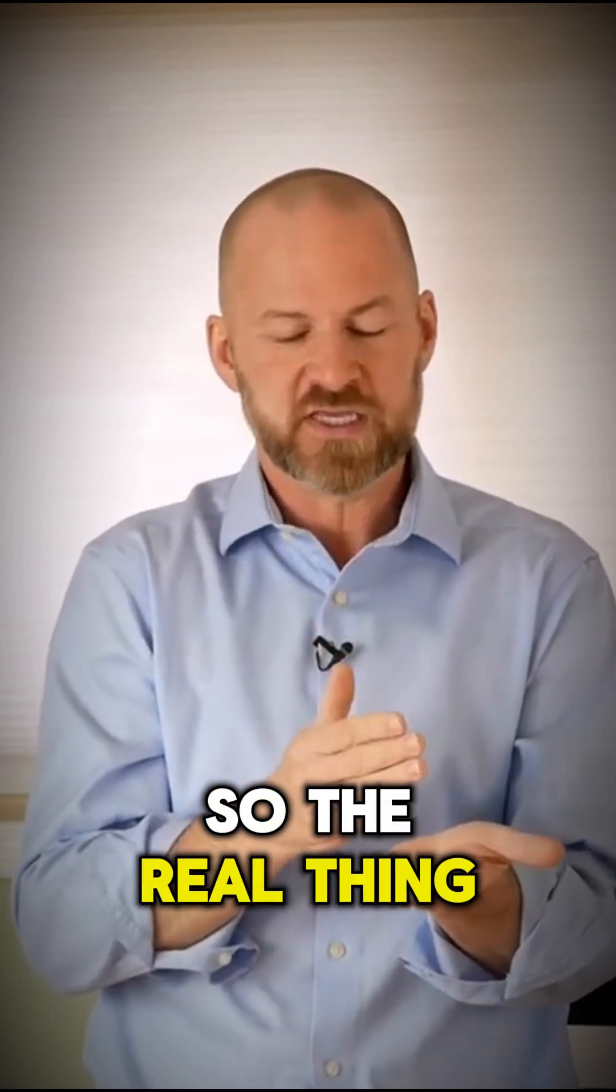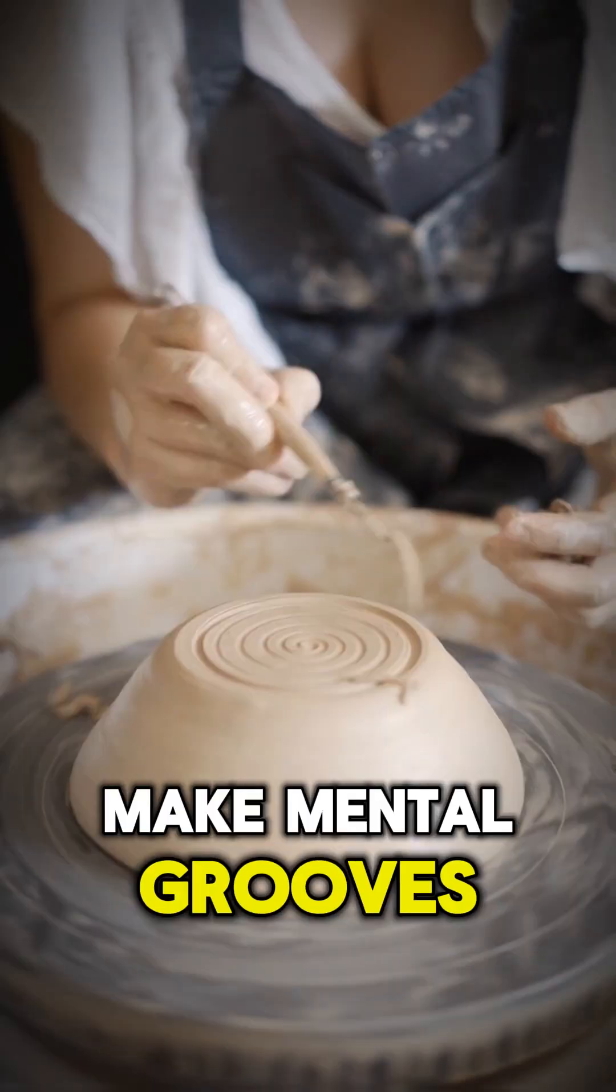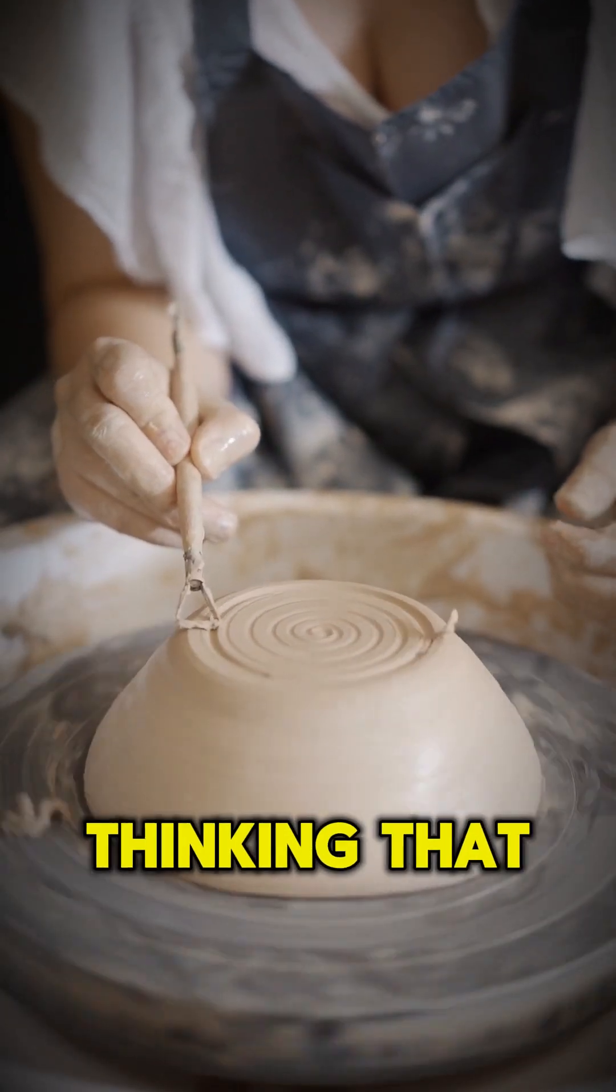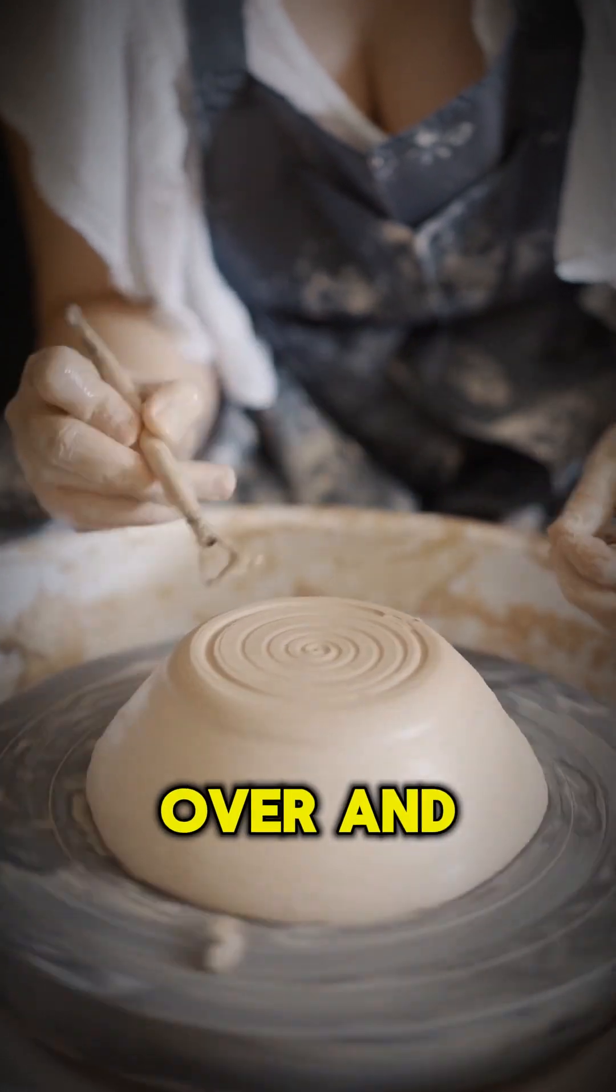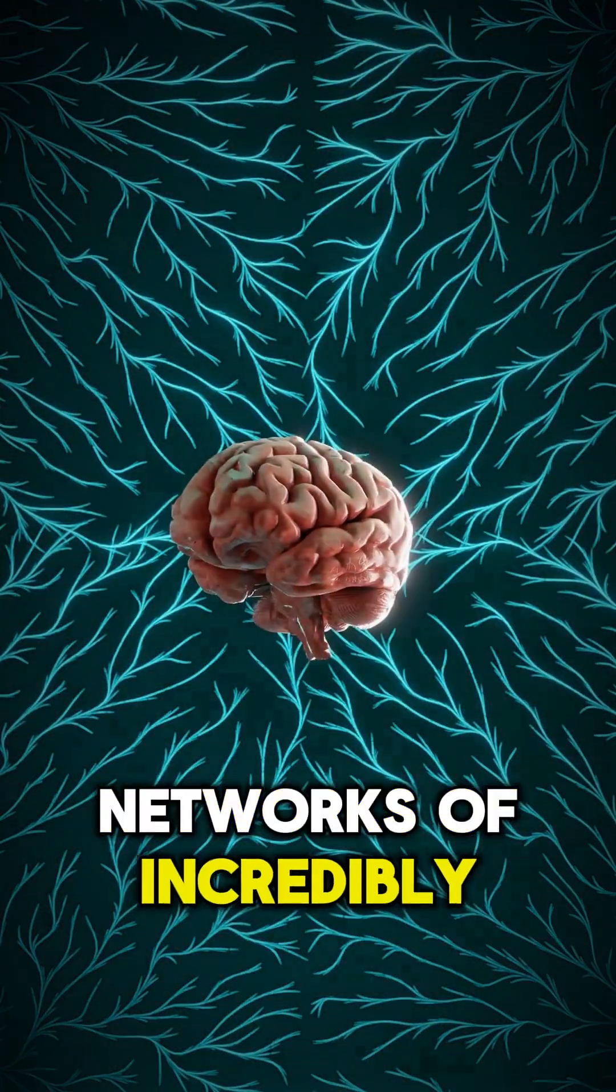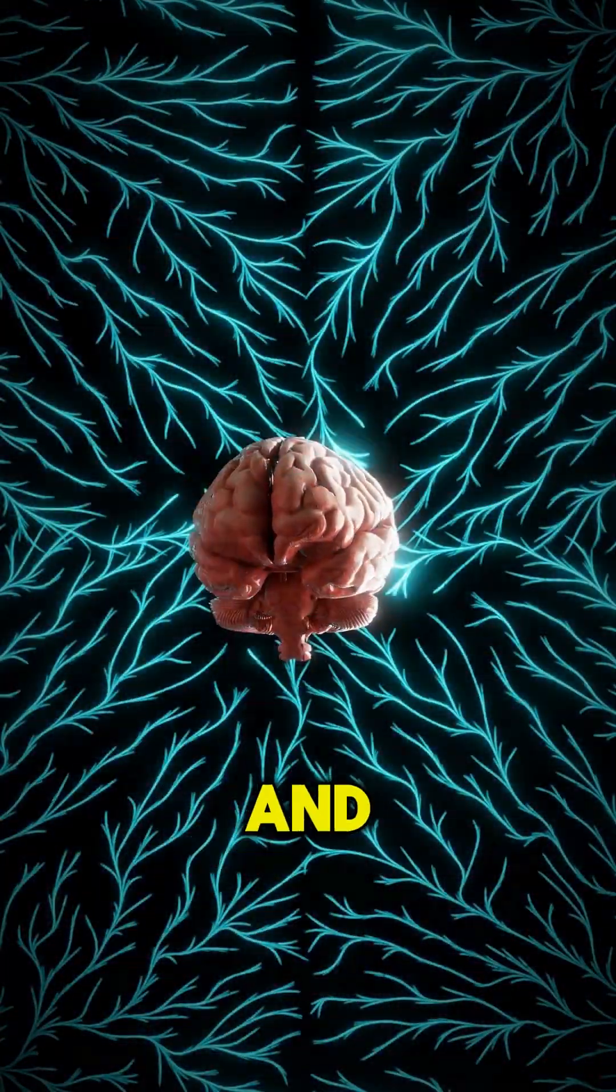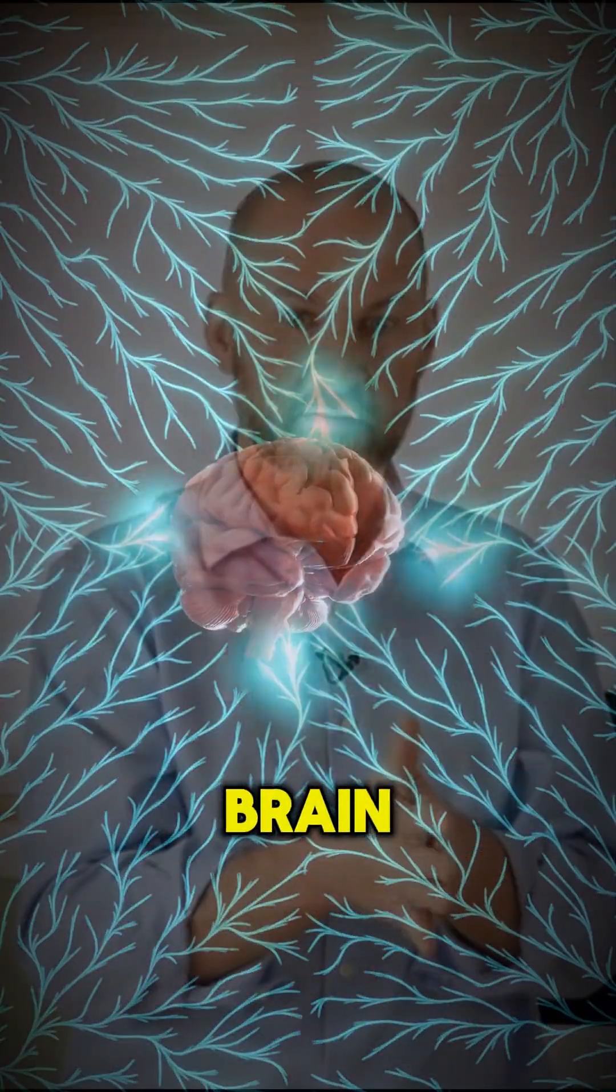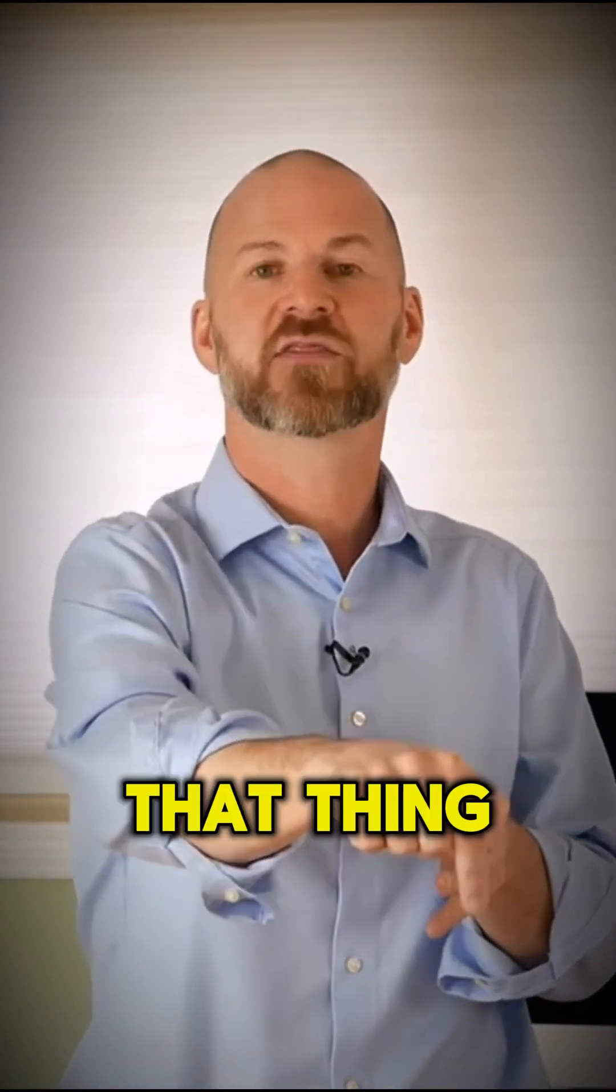So the real thing here is that we make mental grooves. We have ways of thinking that if we think the same way over and over again, our brain literally sets up neural networks of incredibly complex and voluminous brain connections to help us with that thing that we think over and over again.